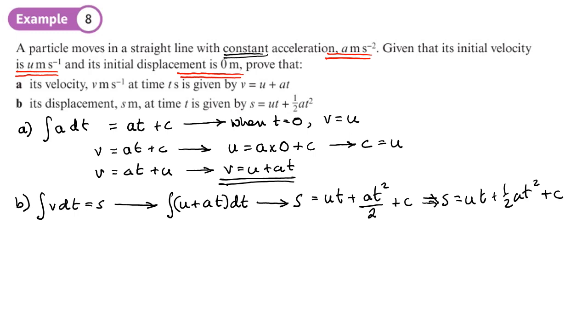Now we need to work out what c is. Now it says its initial position was zero meters, so that means the initial position was zero meters when t was zero, so s equals zero.